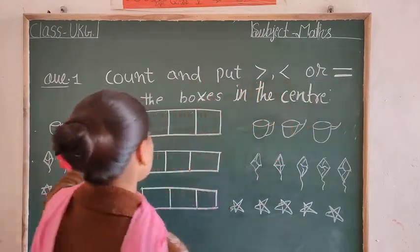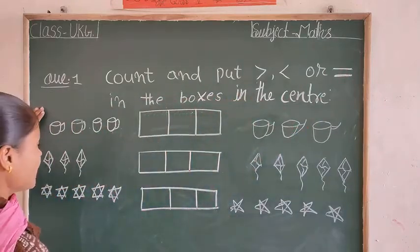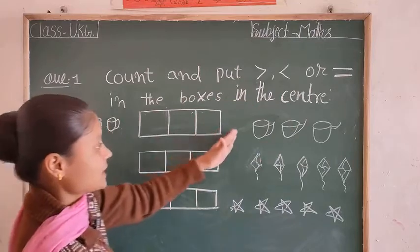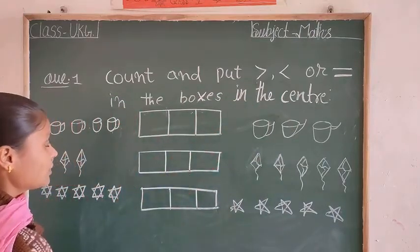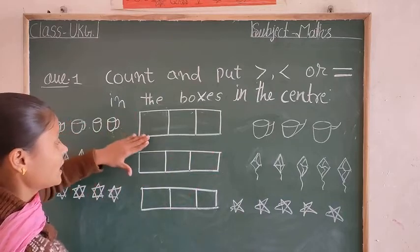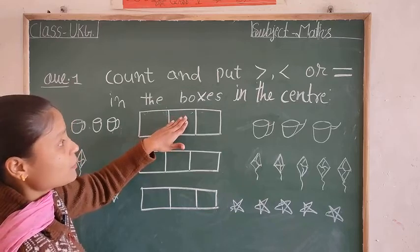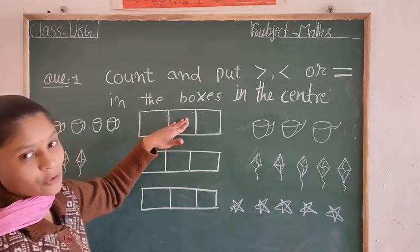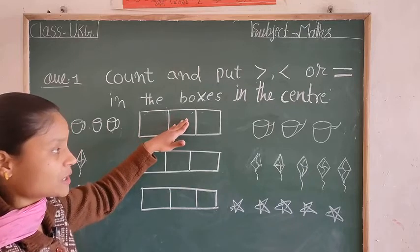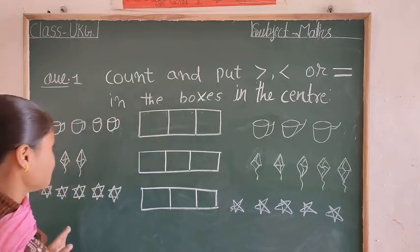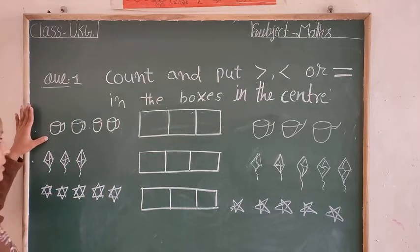Count and put in the boxes. On this side and other side you will have objects. So you have to check this object and see how many objects we found here and at this side. On the opposite side, see how many objects are there. In which case you will use which sign? We are starting. How many objects do we find here on this side and opposite side?